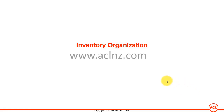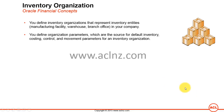Inventory organizations represent inventory entities, which could be manufacturing facilities, warehouses, distribution centers, or branch offices in your company. Once you have defined an inventory organization, you define its associated organizational parameters, which are the source for default inventory costing, control, and movement parameters. These defaults — such as accounting defaults or location-specific defaults — automatically apply at the transactional level.